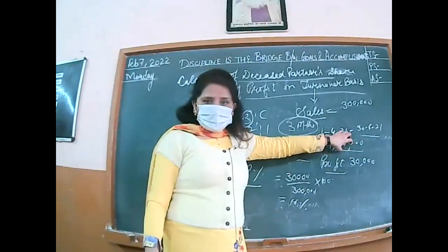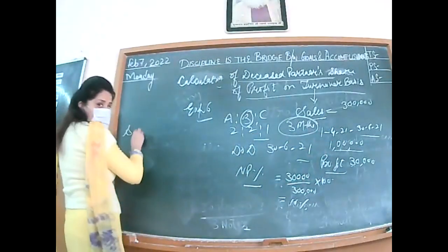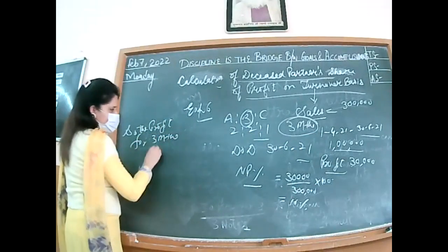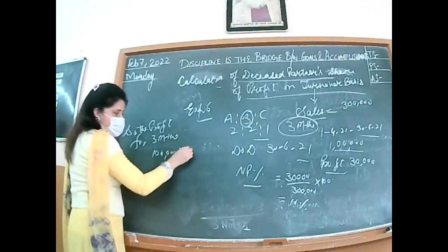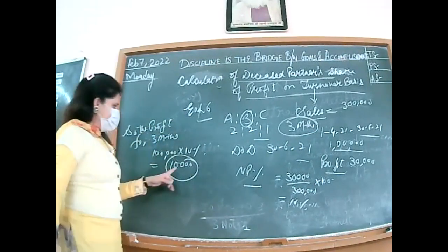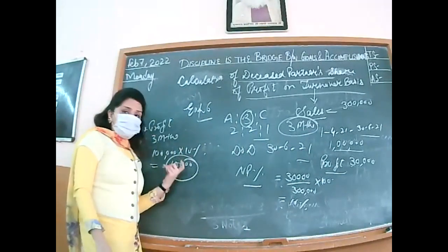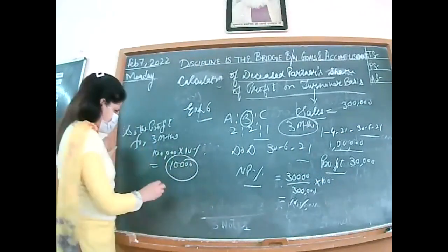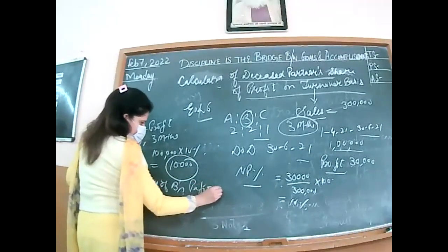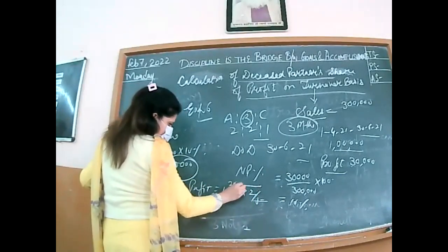He has given us the sale for 3 months as 1 lakh. I will apply the same 10% percentage on the 3-month sales. So the profit earned for 3 months: 1 lakh into 10% = 10,000. This profit is for the whole firm. I will be multiplying it with B's share only. I will not multiply by the time period again, because this is already for 3 months. Share of B's profit: 10,000 × 2/5 = 4,000.